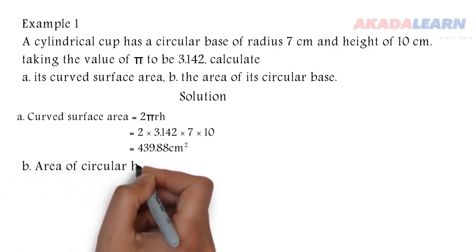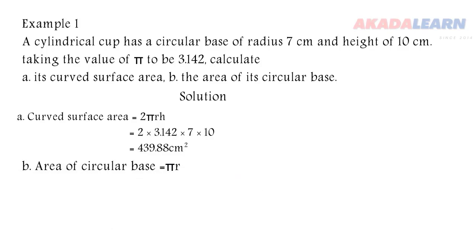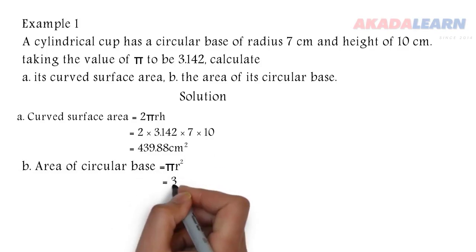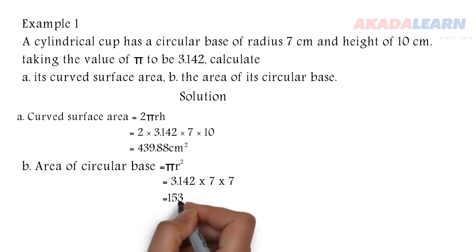Area of the circular base is πr². Our π is 3.142 and our radius is 7, so 7 times 7, and we get our answer right there. Now let's move ahead.